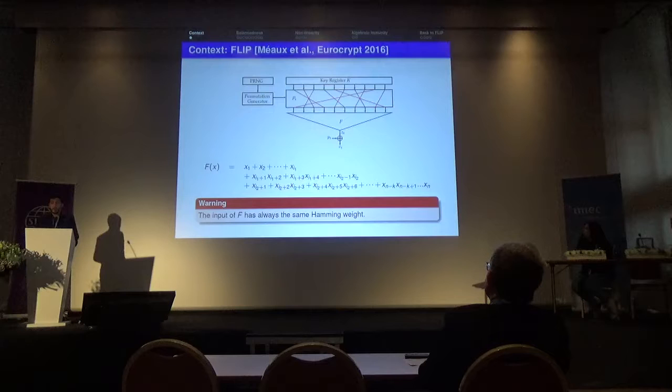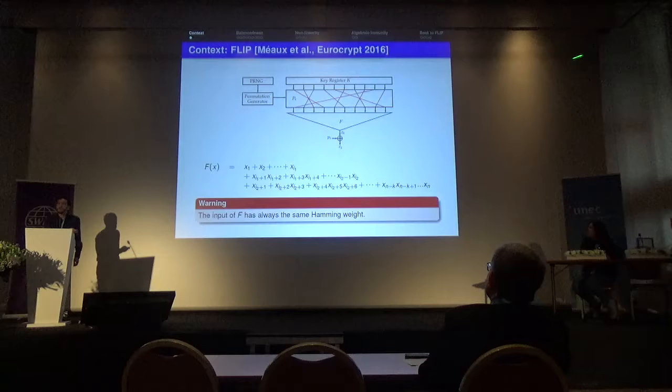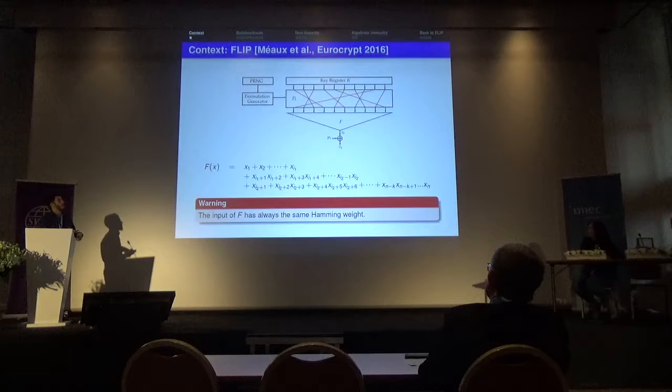CLIP has a very specific design: the secret key is stored in a register that is never updated, and a random permutation is applied at each time step to the secret key. A Boolean function filters the permuted secret key. This cipher is adapted to fully homomorphic encryption as the filtering function f has a very low multiplicative depth, which is quite good for FHE.